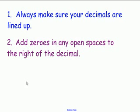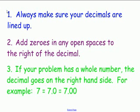Number two, you want to add zeros to any open spaces to the right of the decimal. You really want to have the same amount of digits in the top number and the bottom number, especially after the decimal.